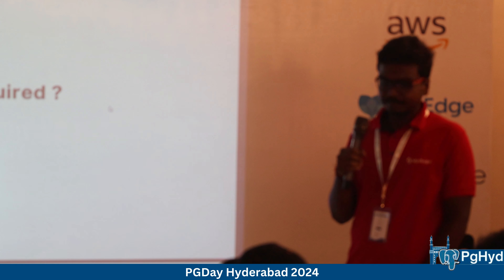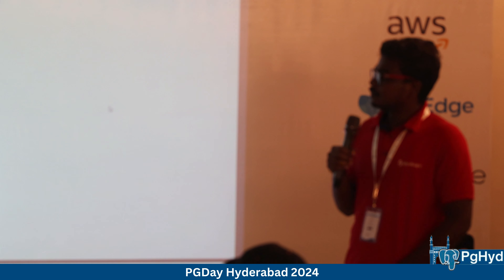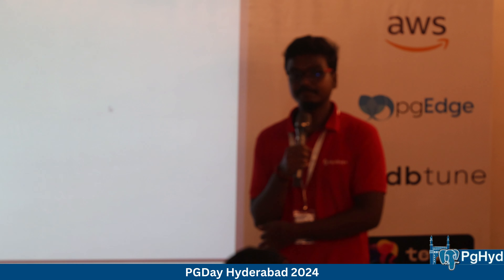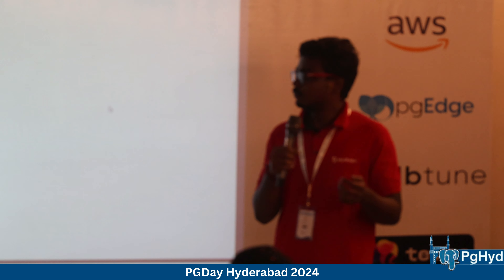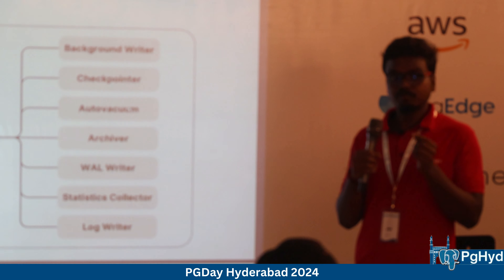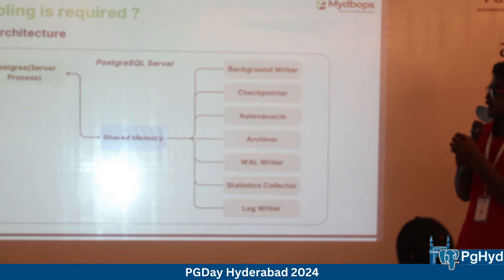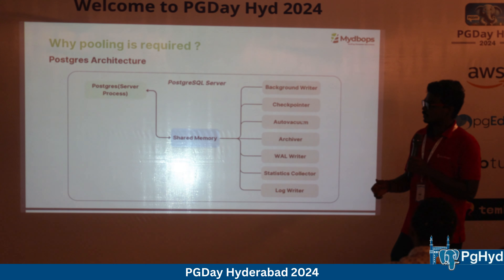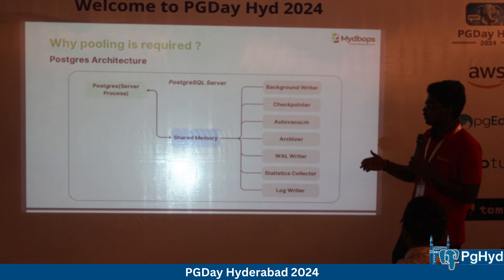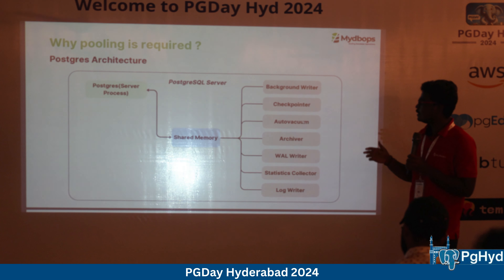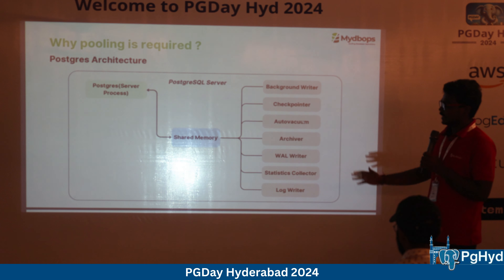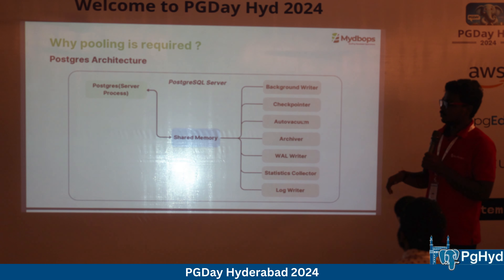In the default architecture, an application connects directly to the database. When we introduce connection pooling, the pooler sits between the application and the database. Connections from the application hit the pool, and only a minimal number of connections actually reach the database. All applications fetch connections from the connection pool, and only the available connections are forwarded to the database.